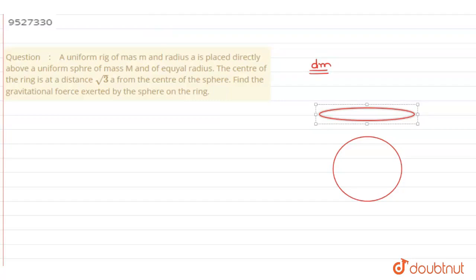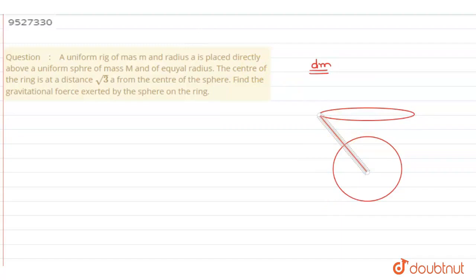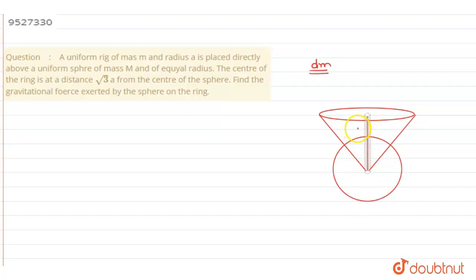Let us now draw the lines. I have drawn a line in the center, then I have drawn a line here, and this is the center of the ring. Let us draw a line there also, joining the two centers. I have drawn these lines — they are all imaginary construction lines.